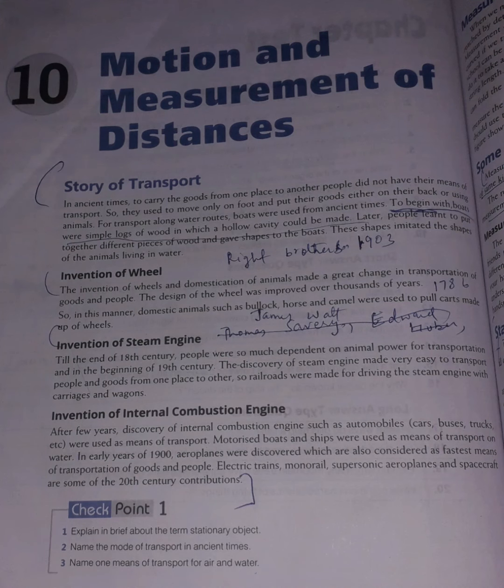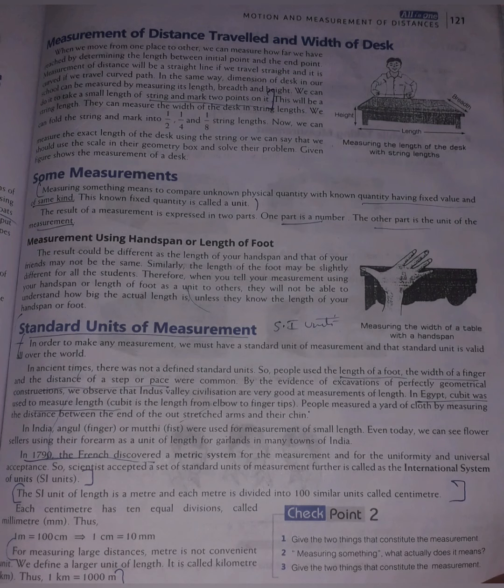Give two examples of all the three modes of transport. Land transport: car and bus. Water transport: ship and boats. Air transport: aeroplanes and helicopters.